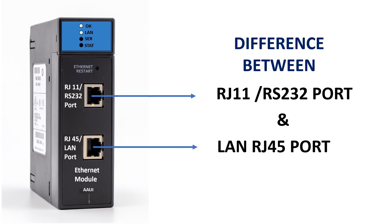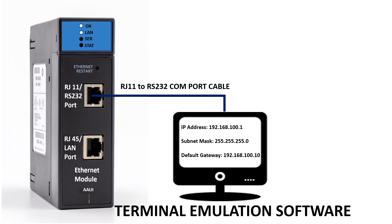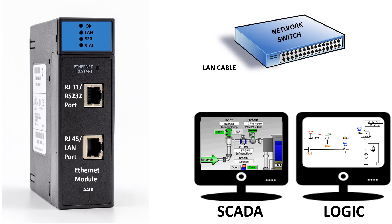Let's understand the difference between the station manager RS232 RJ11 port and the LAN RJ45 port. The RS232 port, connected via an RJ11 connector, is a serial communication port. Its purpose is to configure network parameters like IP address, subnet mask, and default gateway. The LAN port, called the Ethernet port, is connected via an RJ45 connector.